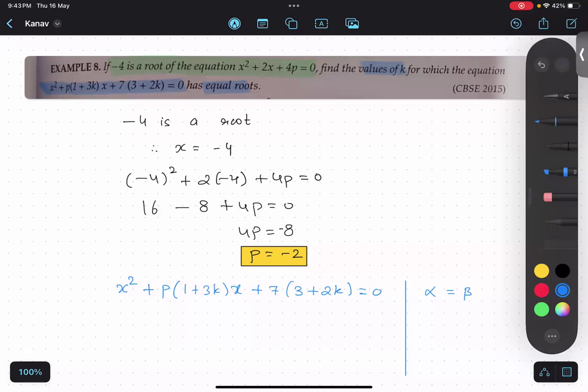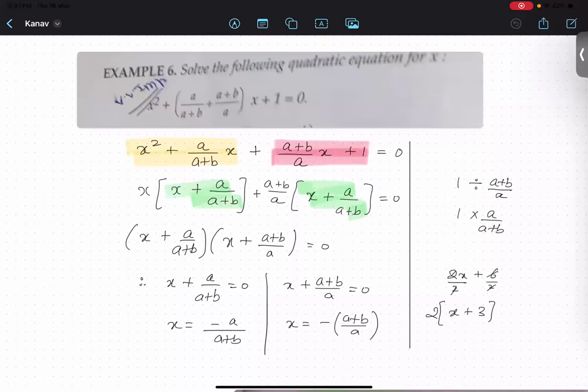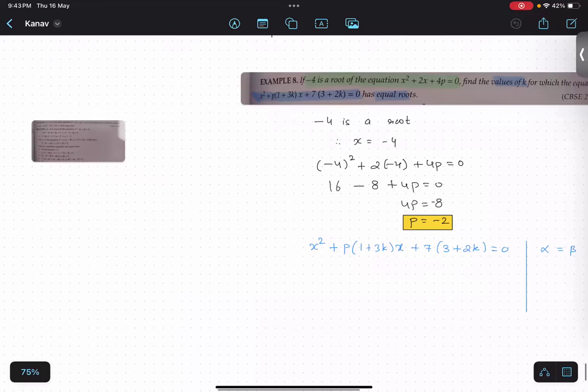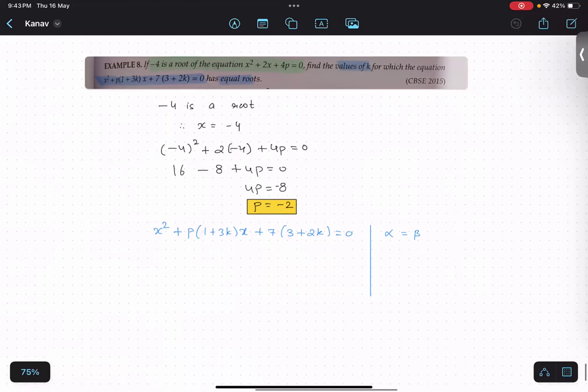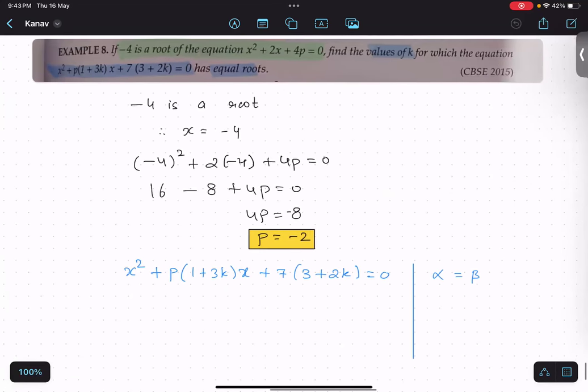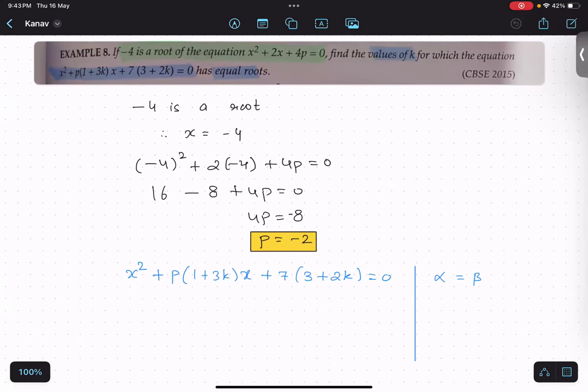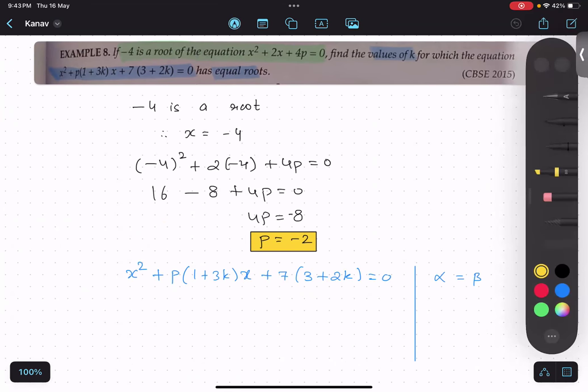So after looking at this particular question, you might feel okay, it's so confusing. But if you pay close attention, this p is there. So I was saying this p is given. Can you see that? So I'm just going to put the value of p in that so that the question comes in one variable only.